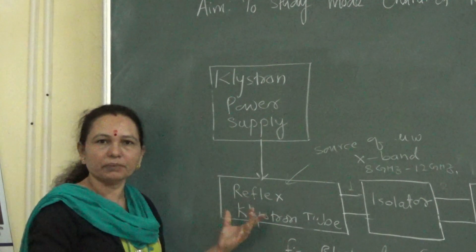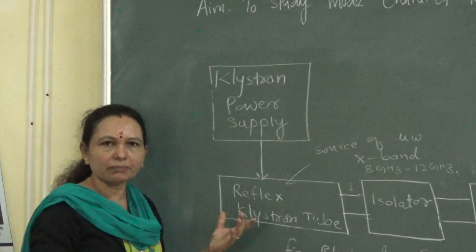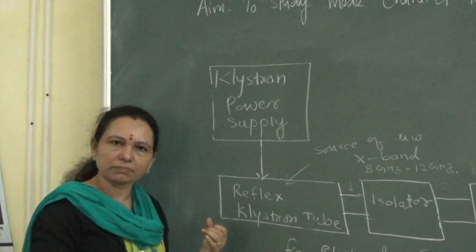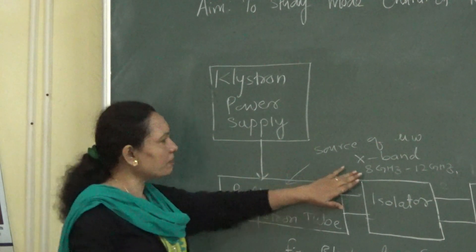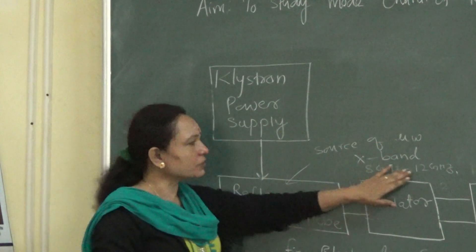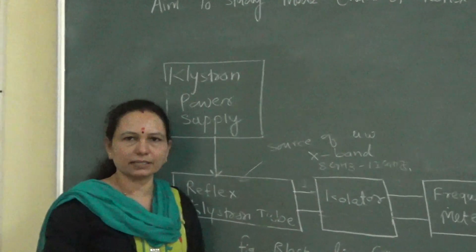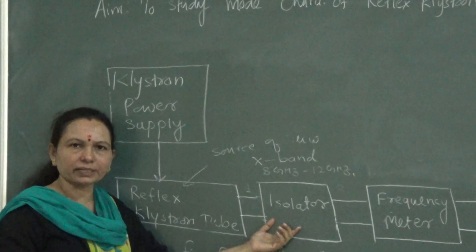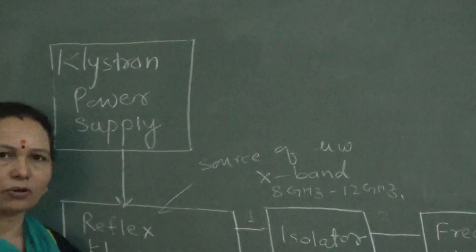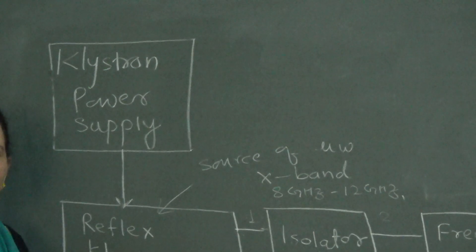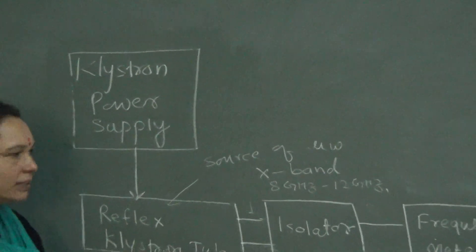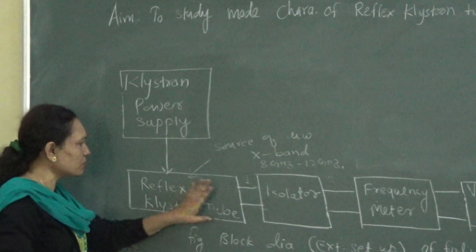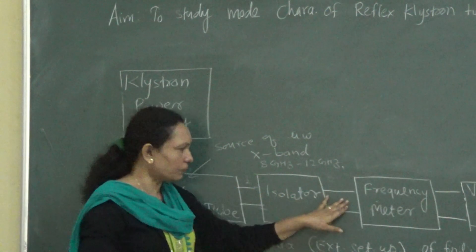All the equipment available in the microwave lab operates in the X-band frequency range, that is from 8 GHz to 12 GHz. The next block is an isolator, used to avoid any instability in the operation of the klystron. We are using the isolator to allow the signal to pass only from port 1 to port 2.